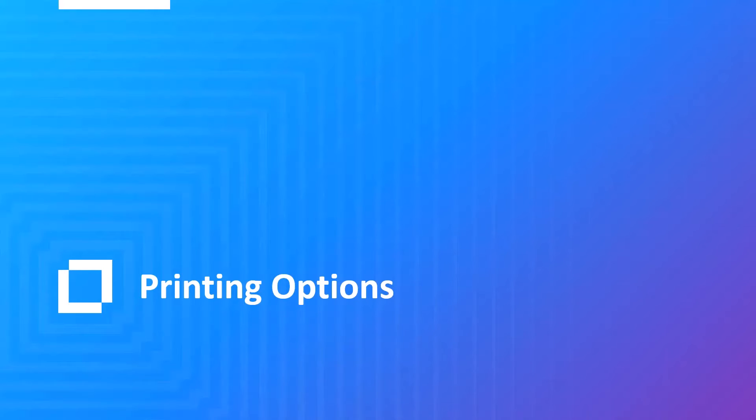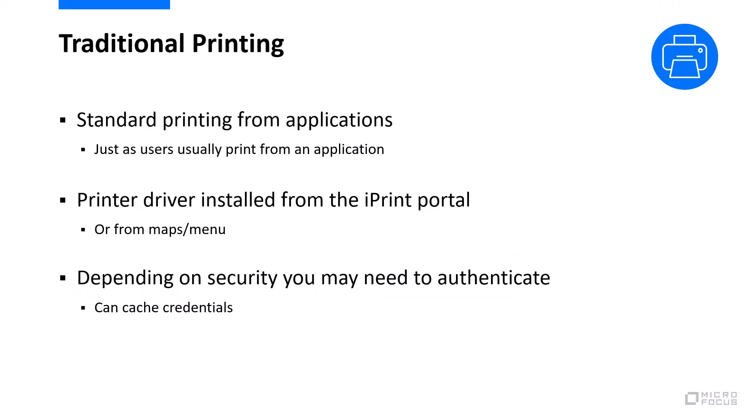Let's go through some of the print options available to a user. We mentioned traditional printing — the standard printing you get from an application. You have to have the printer driver installed for that to work. Depending on the security of a printer, you may need to authenticate to access it when you print. But you can cache your credentials so you don't get asked every time.